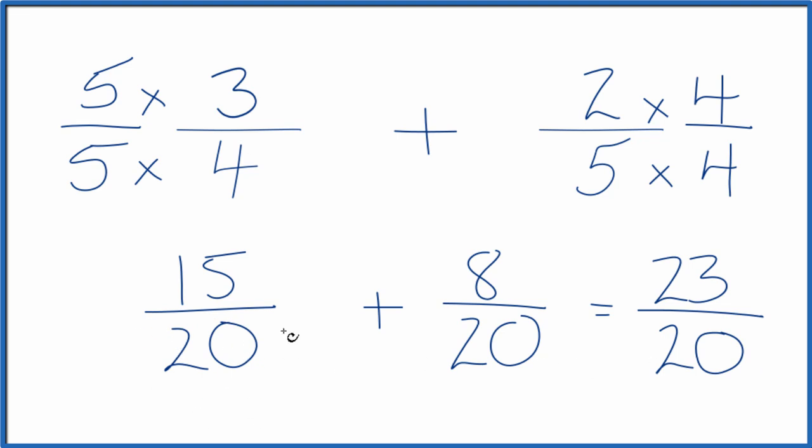When we add fractions, since we have the same denominator, we just keep that the same. This is an improper fraction. The numerator is larger than the denominator. So you could change it to a mixed number. 20 goes into 23 one time with 3 left over. So as a mixed number, it would be 1 and 3 twentieths.